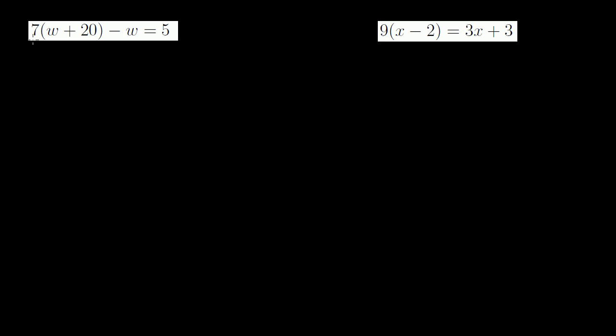So here we have 7 times (w + 20) minus w is equal to 5. Let's see if we can solve this. There's multiple ways to solve these. One thing I like to do is distribute the numbers out, because if I distribute the numbers out, I'll get a 7w, and then I can subtract w from there. So maybe I can merge the w terms somehow.